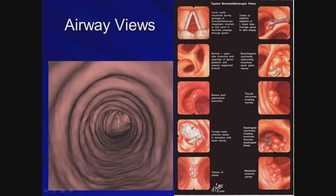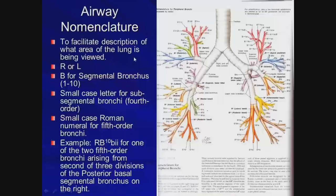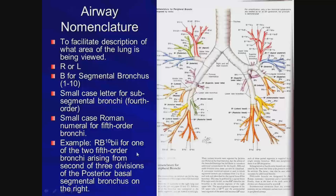There is actually a systematic way to label each specific bronchi — right and left main stem, then segmental designation, then a lowercase letter for subsegmental, and Roman numerals for fifth-order bronchi. For example, RB10BII designates the second of five fifth-order bronchi arising from the third division of the posterior basal segment. This allows the bronchoscopist to document the precise location of any defect with greater precision.